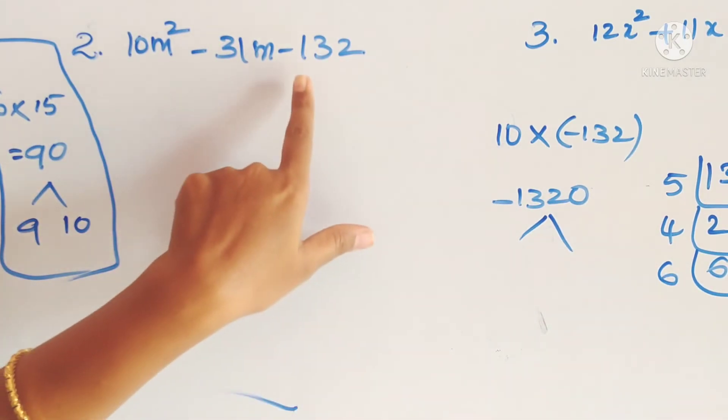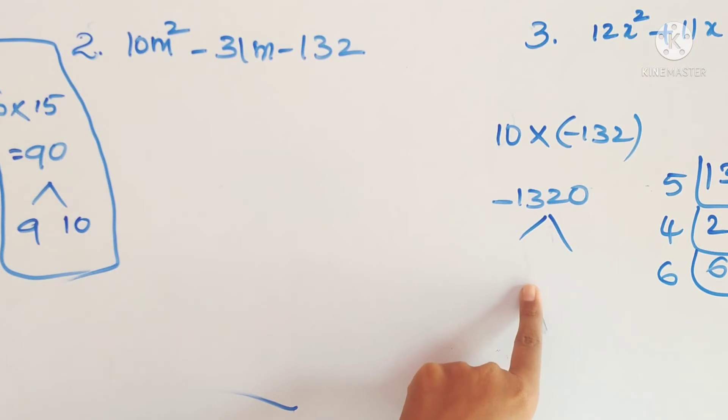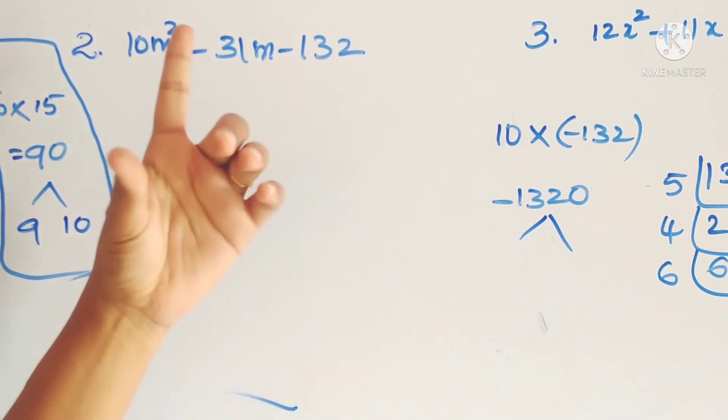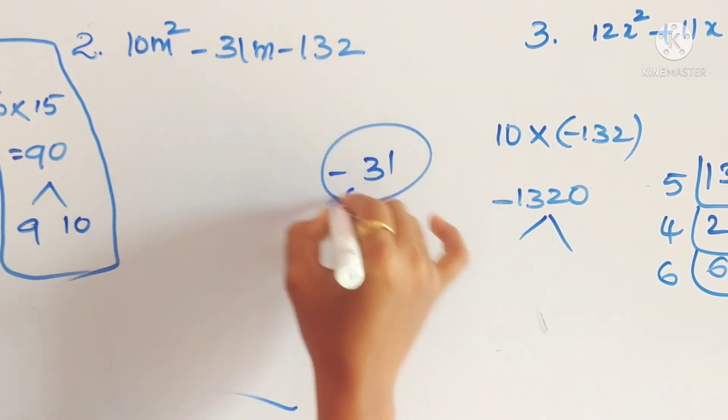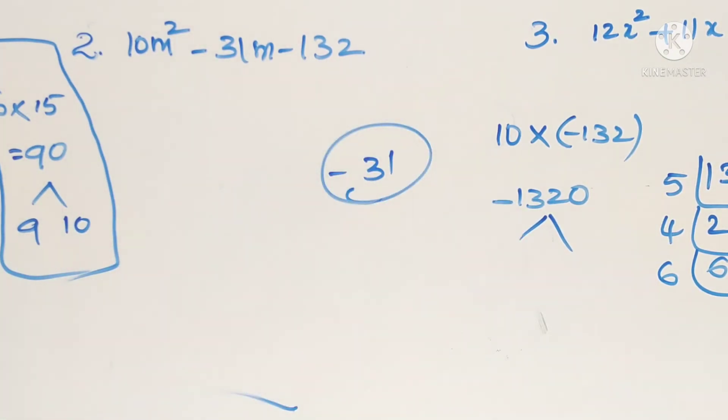So here we will find out. Multiplication is 1320 and addition and subtraction is minus 31. So it is 5 into 4, how much? 20. So 11 into 6 is 66. So multiply is 1320, but subtraction is 31.